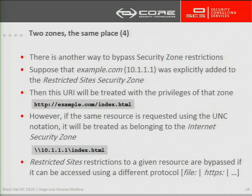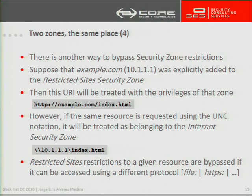There is also another way to bypass, or render useless, the security zone restrictions — by using another protocol to access the remote resource. For example, if you are using HTTP to access a resource on a web server that is explicitly added to a restricted site, if you can access the same server using HTTPS or SMB, the same resource will be treated as belonging to the Internet, so the explicit restrictions will have no effect.